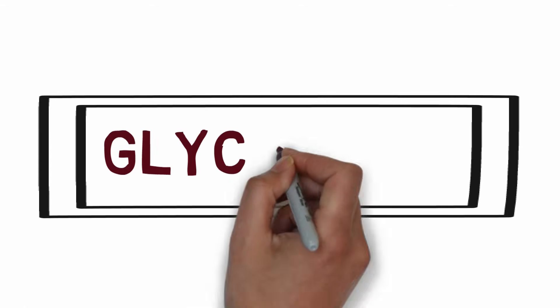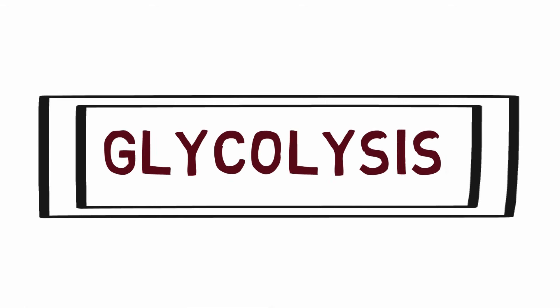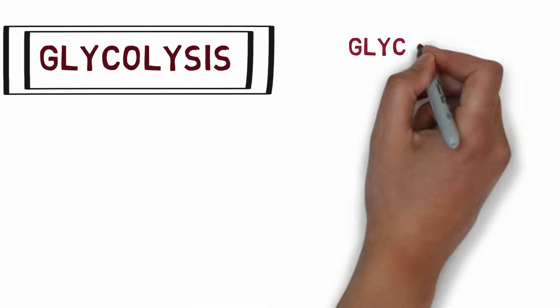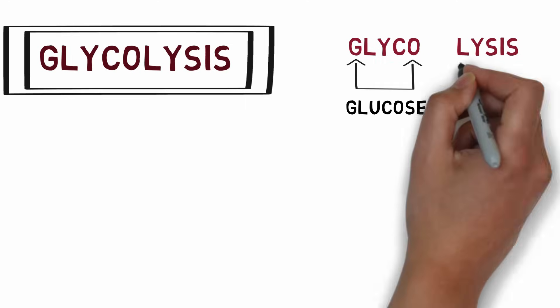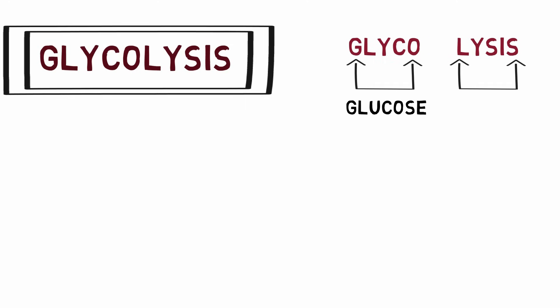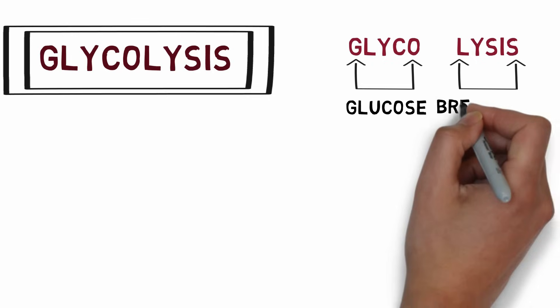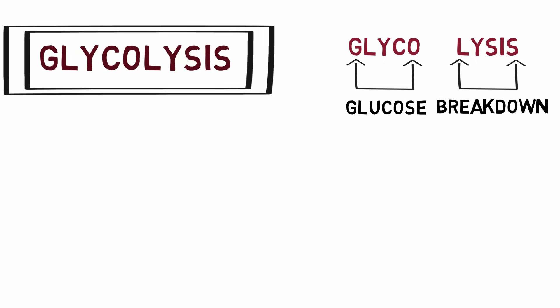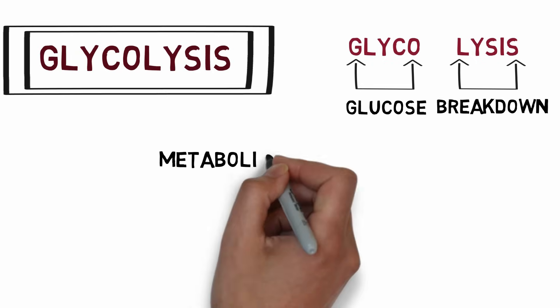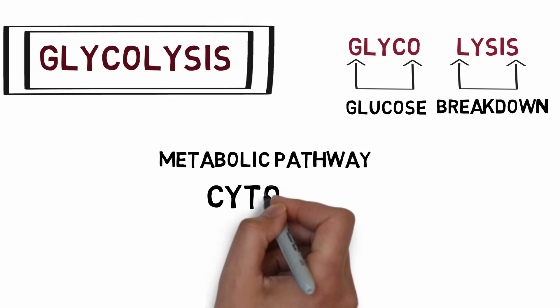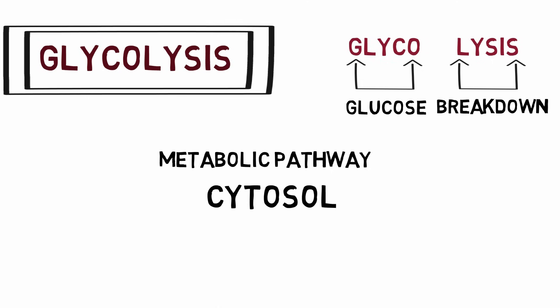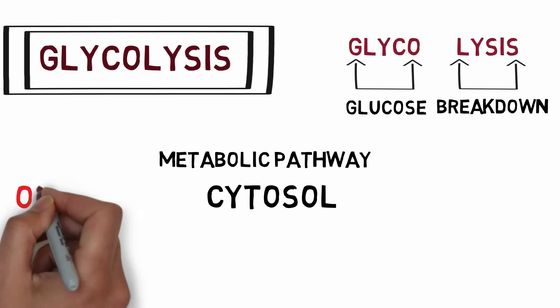In this video we will study about the process of glycolysis. The word glycolysis is made up of two words: glyco, meaning glucose, and lysis, meaning breakdown. Glycolysis is a metabolic pathway that involves the systematic breakdown of glucose to produce energy, and it takes place in the cytosol of the cells.